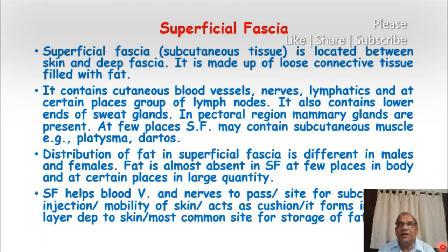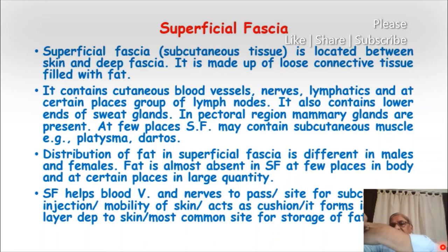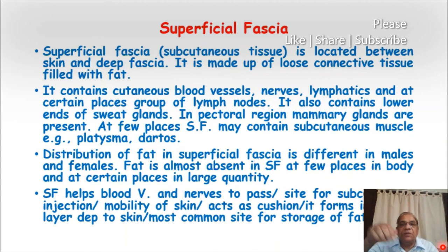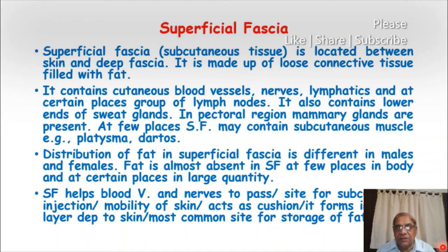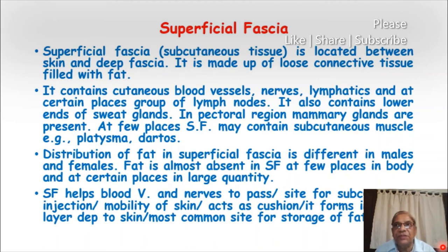Our skin is mobile because of the superficial fascia. For example, on the dorsum of the hand you can pick up and move a fold of skin — this is possible because the superficial fascia here is providing mobility to the skin. The loose connective tissue with minimal fat present on the dorsum of the hand provides that mobility. If there were no superficial fascia or loose connective tissue deep to the skin, it would be difficult to move the skin.